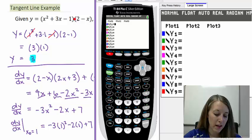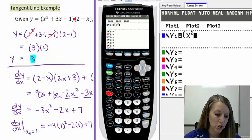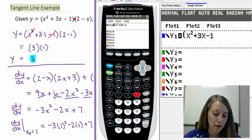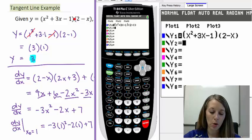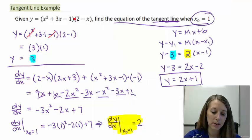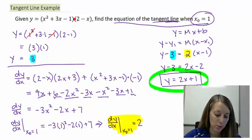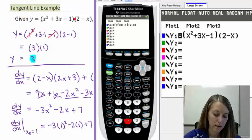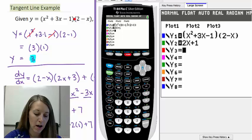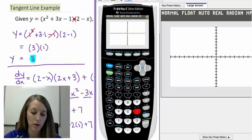So the first thing that I do is I substitute in my original equation x squared plus 3x minus 1. And that is multiplied by 2 minus x. So that was my original equation. I also need to substitute in my tangent line which we came up with 2x plus 1. And so let's go ahead and see what the graph looks like on our standard window.